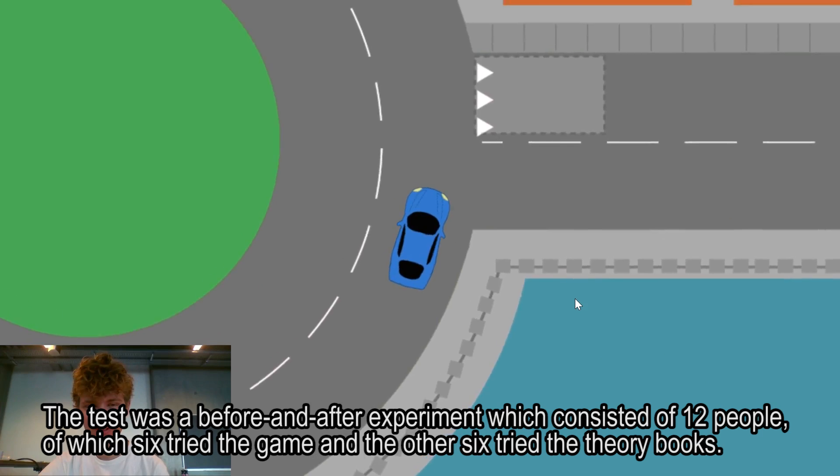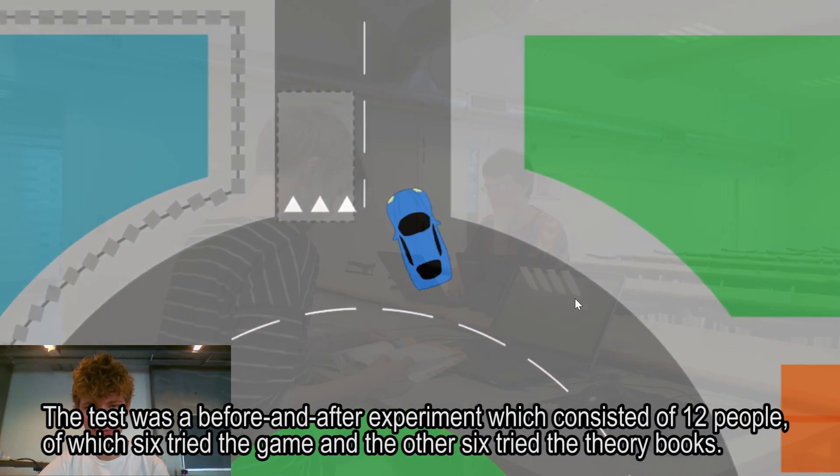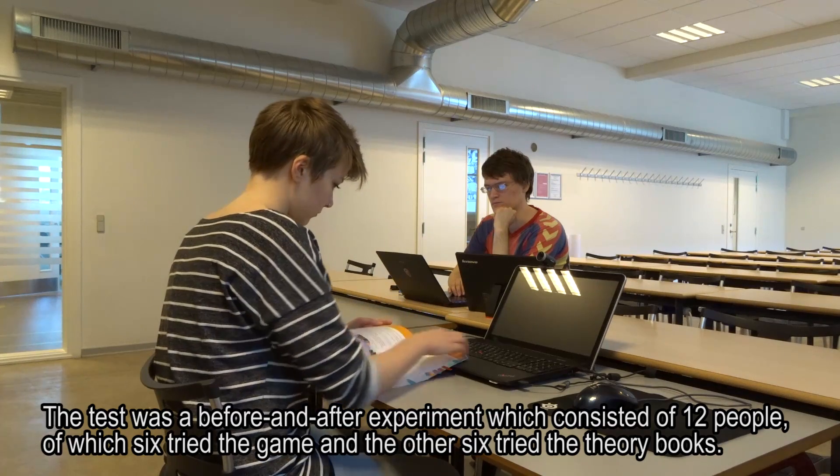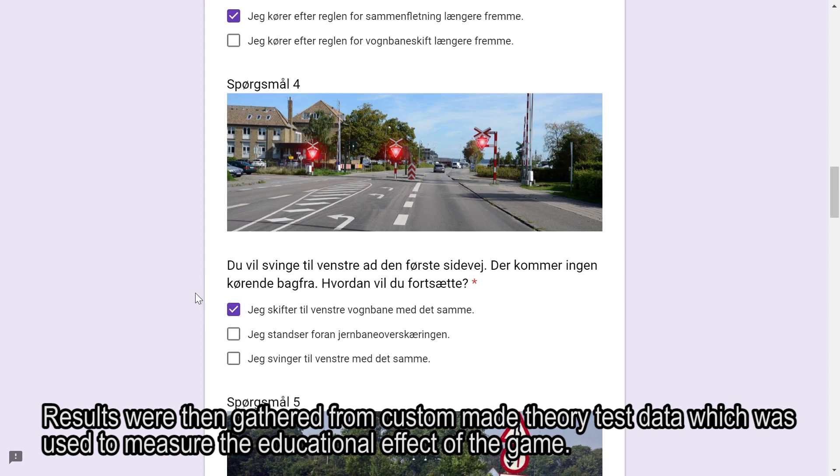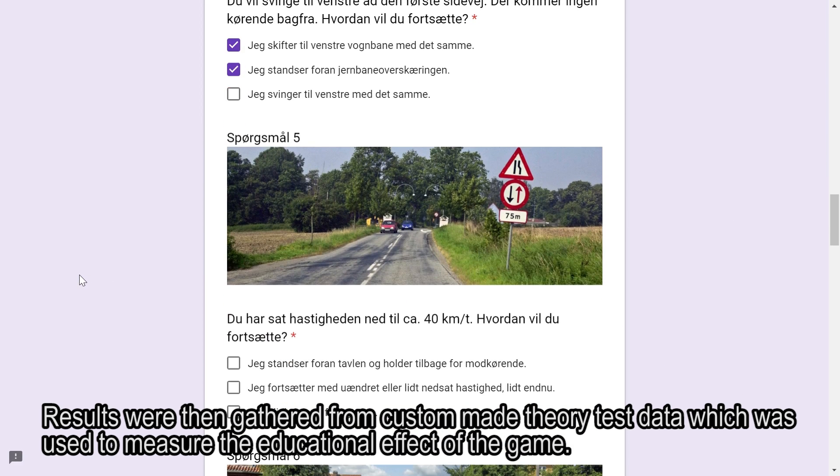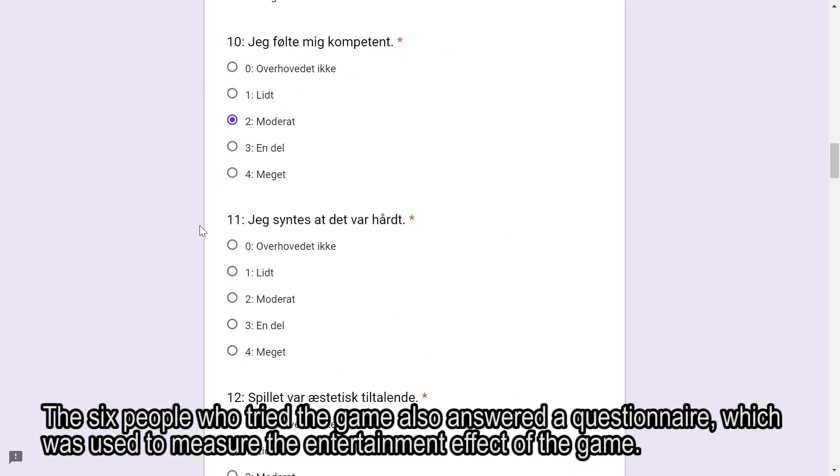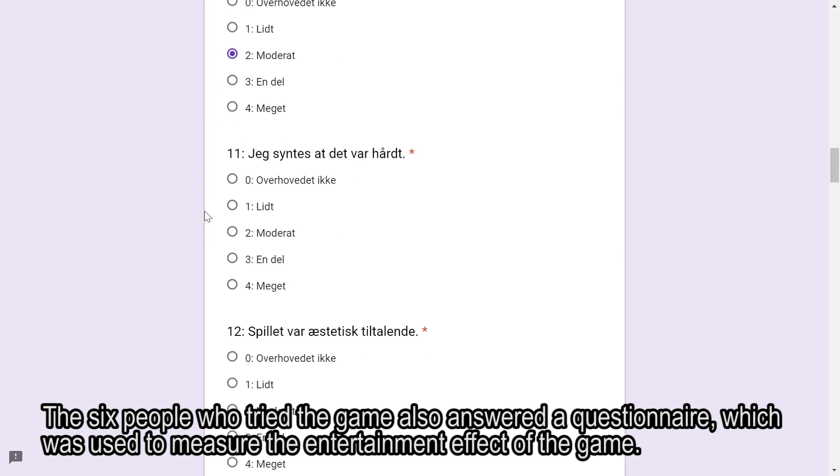The test was a before and after experiment which consisted of twelve people, of which six tried the game and the other six tried the theory books. Results were then gathered from custom made theory test data, which was used to measure the educational effect of the game. The six people who tried the game also answered a questionnaire, which was used to measure the entertainment effect of the game.